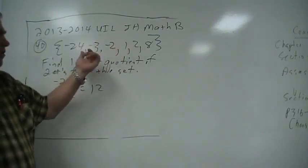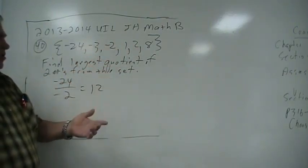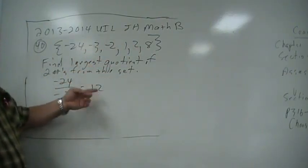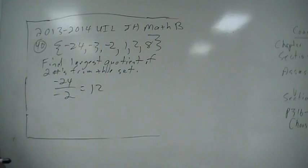And so, negative divided by positive is negative. That's smaller, so it has to be 12. 12 is the answer on that one.